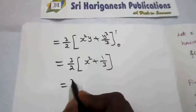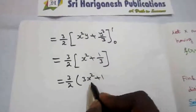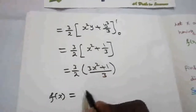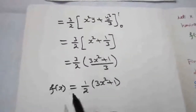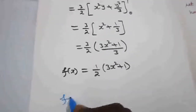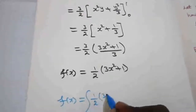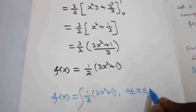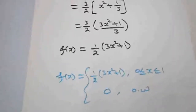Taking LCM: (3/2) × (3x² + 1)/3. The 3s cancel, so f(x) = (1/2)(3x² + 1). The marginal density function of x is f(x) = (1/2)(3x² + 1) for 0 ≤ x ≤ 1, and 0 otherwise.